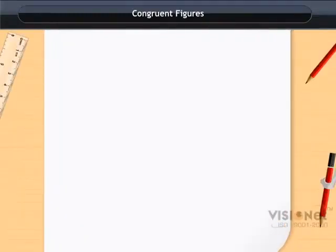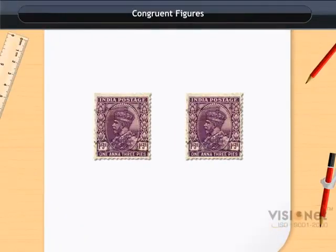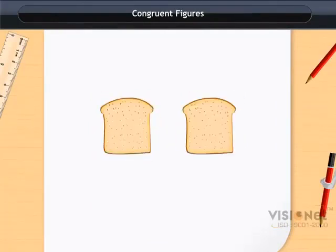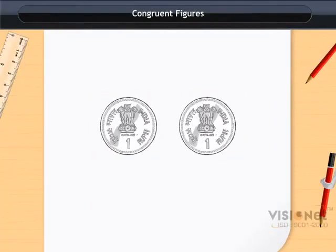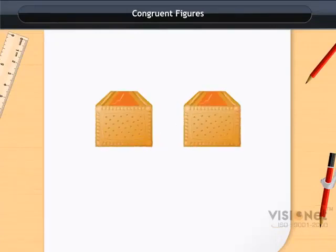Congruent figures. Look at these figures. A pair of stamps, slices of bread, coins of same denomination, and biscuits in the same packet.